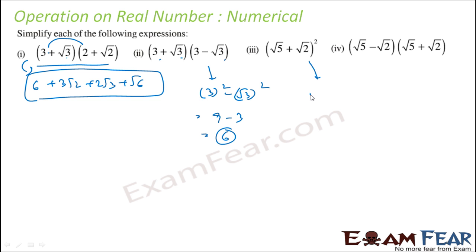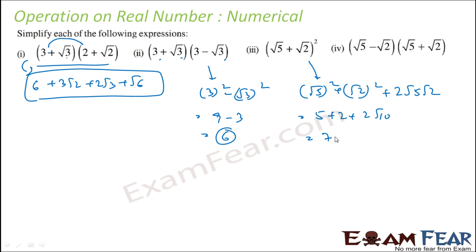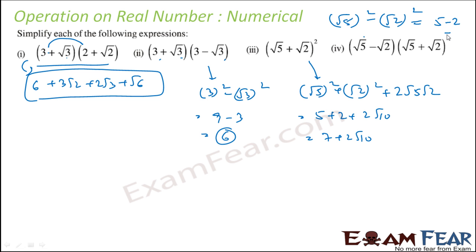Now (root 5 plus root 2) squared: this becomes a squared plus b squared plus 2ab, that is root 5 squared plus root 2 squared plus 2 times root 5 times root 2. Root 5 squared is 5, root 2 squared is 2, and 2 root 5 root 2 is 2 root 10, giving 7 plus 2 root 10. For (root 5 plus root 2)(root 5 minus root 2), this is a squared minus b squared: root 5 squared minus root 2 squared is 5 minus 2, which equals 3.